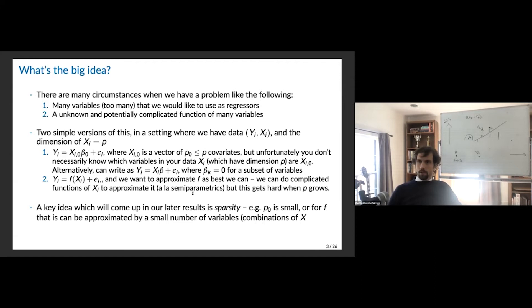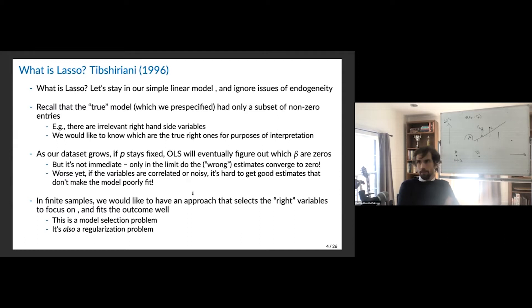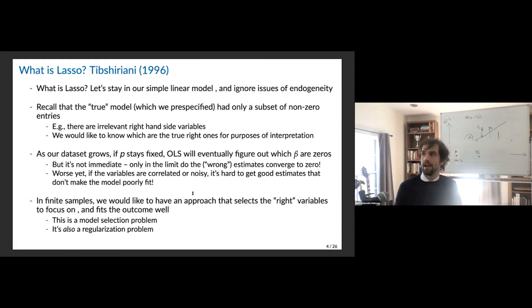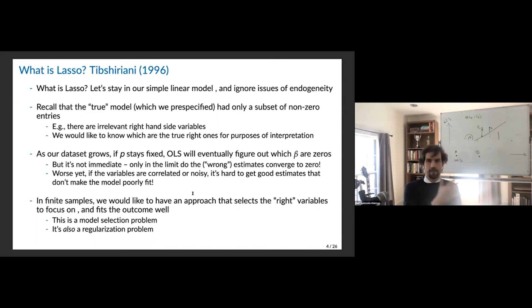So what's Lasso doing? We're going to ignore any issues of endogeneity — we're assuming x's are what they are, and we're interested in fitting these linear models. We're thinking about a true model where only a subset of covariates are relevant. An example where this shows up is genetics — there's the idea that certain genes cause certain phenotypes, and there are many regressions with many right-hand side things, and you'd like to pick the few that matter. We want to know what are the true right ones for the purpose of interpretation.